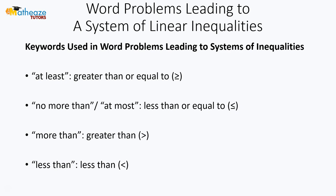There are four of them. The first one is 'at least,' which means it would be greater than or equal to a specific value. 'No more than' or 'at most' simply means it will be less than or equal to a certain value. When we say 'more than,' it must be greater than the value. When we say 'less than,' it must be less than the value.